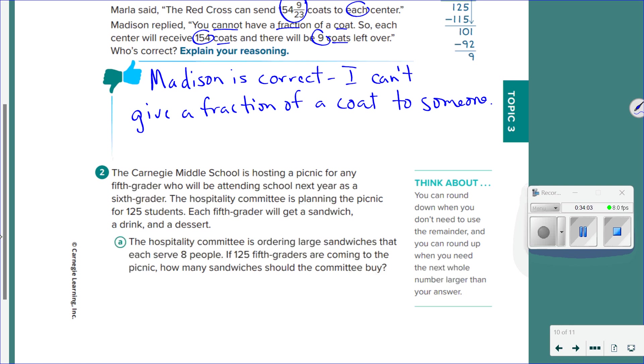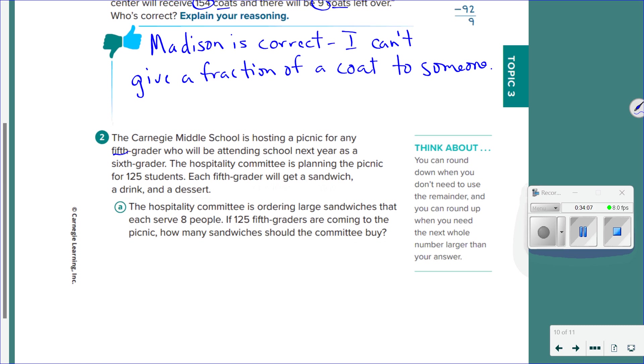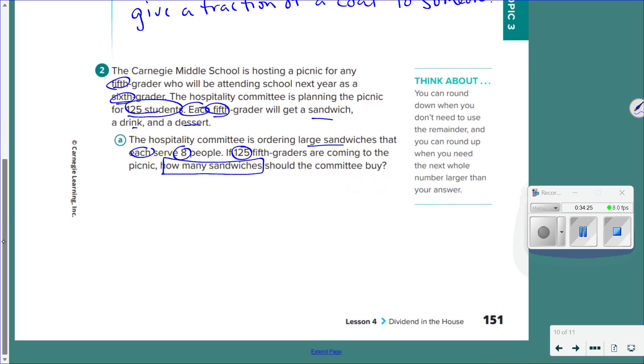Okay, because of time, we'll work this last one out together. Carnegie is hosting a picnic for a fifth grader who will be attending school next year as a sixth grader. They're planning for 125 students. Each fifth grader will get a sandwich, a drink, and a dessert. They're ordering large sandwiches that each serve eight people. If there was 125, how many sandwiches should they buy? So all I'm doing is 125 dividing by eight. That's going to go once. Subtract eight gives me a four. 45 is going to go five times. Subtract 40 gives me five. Five eighths. Can I order five eighths of a sandwich? No, so she needs 16. Don't forget, 20, you need to be in math. He had a 24. So it's not she, they need 16 sandwiches. Good luck, guys.